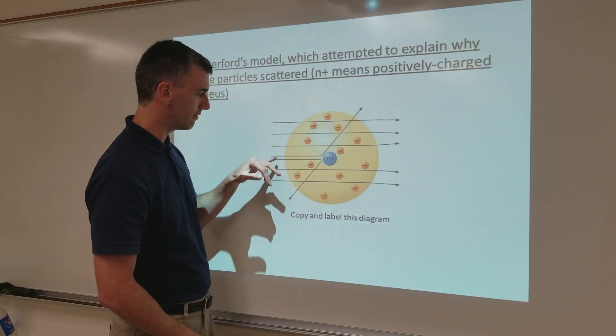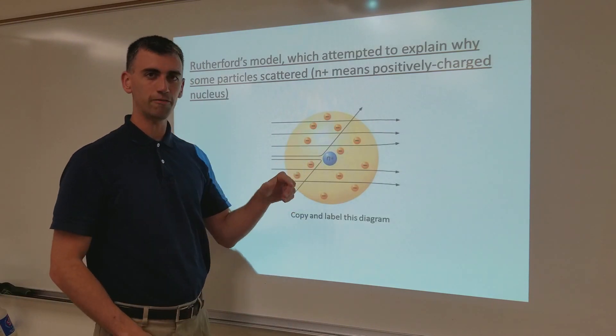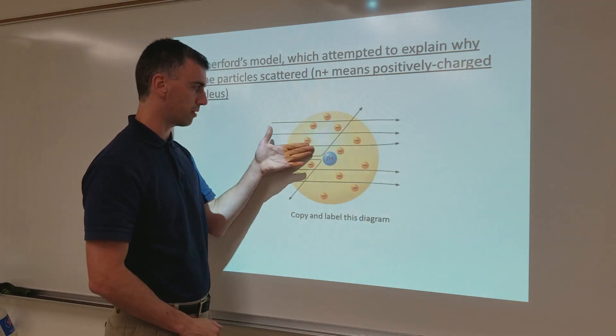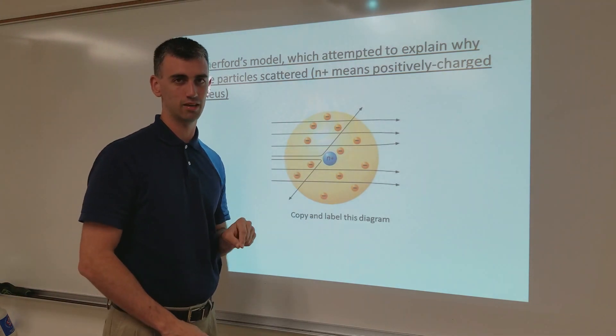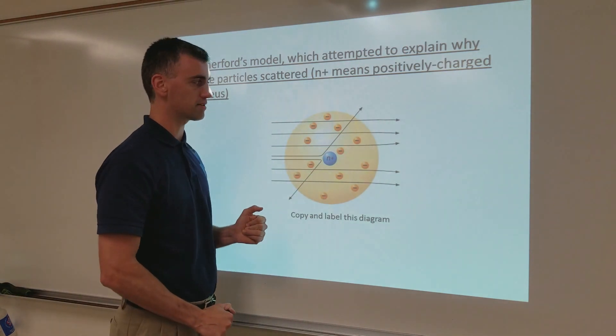So, that would explain why a few of them bounced off. And because it's so tiny, he figured just by chance, most of these alpha particles would not hit the nucleus, because the nucleus is tiny, and most would go through. That would explain his observations.